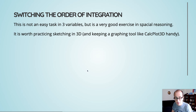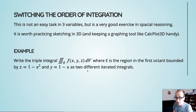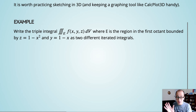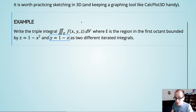Switching order of integration: with three variables, you have six ways of arranging them — z, y, x; y, x, z; x, y, z; et cetera. Consider a triple integral over region E in the first octant, with all variables positive. The region is bounded by two surfaces. The tricky business is that these surfaces are not just functions of Z — they're different — and that's where the difficulty lies.